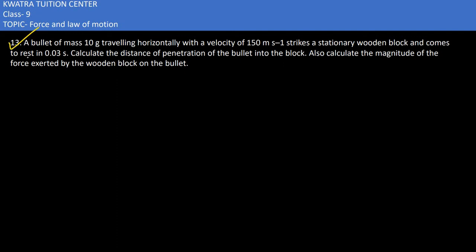Now in the 13th part, we are saying that a bullet is there with a mass of 10 grams. Grams must be converted into kg, so it will become 0.01 kg. How? Dividing it by 1000.